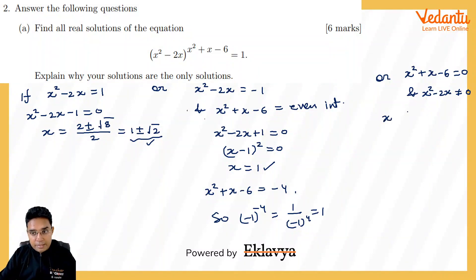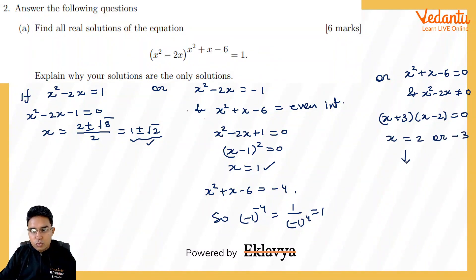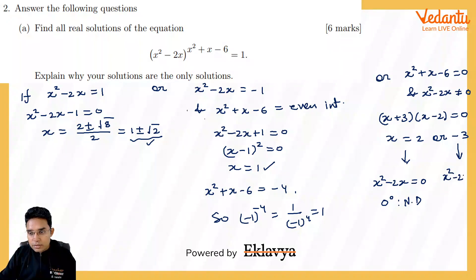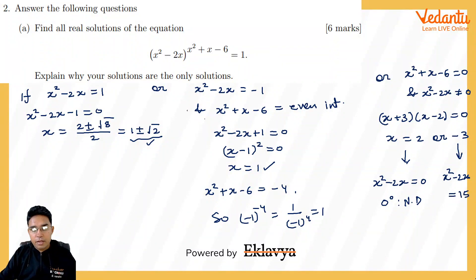For the third scenario, x²+x-6 = 0 factors as (x+3)(x-2) = 0, giving x = 2 or x = -3. When x = 2, the base x²-2x = 4-4 = 0, so we get 0⁰, which is undefined — not a valid solution. When x = -3, the base x²-2x = 9+6 = 15, and the power is 0, so 15⁰ = 1. This is valid.